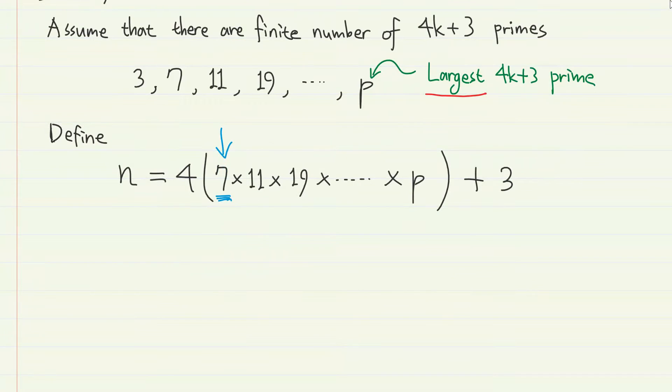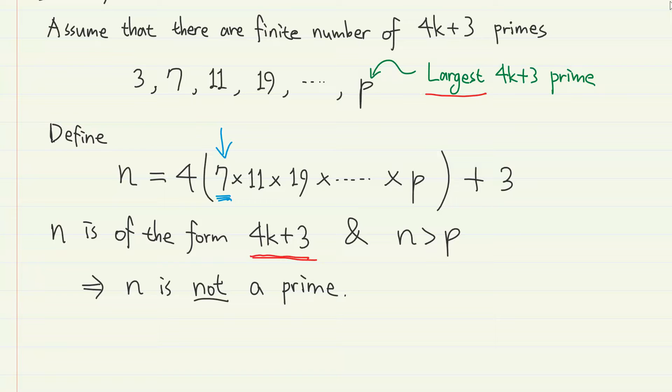If we take a closer look at this n, we can notice several things. First, n is an integer of the form 4k plus 3, and n is definitely greater than p, so by our assumption, n is not a prime number.